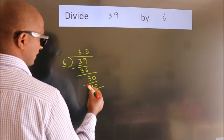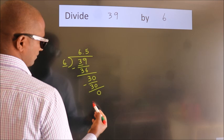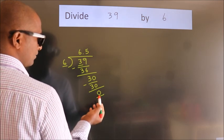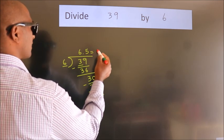Now we subtract. We get 0. We got remainder 0. So this is our quotient.